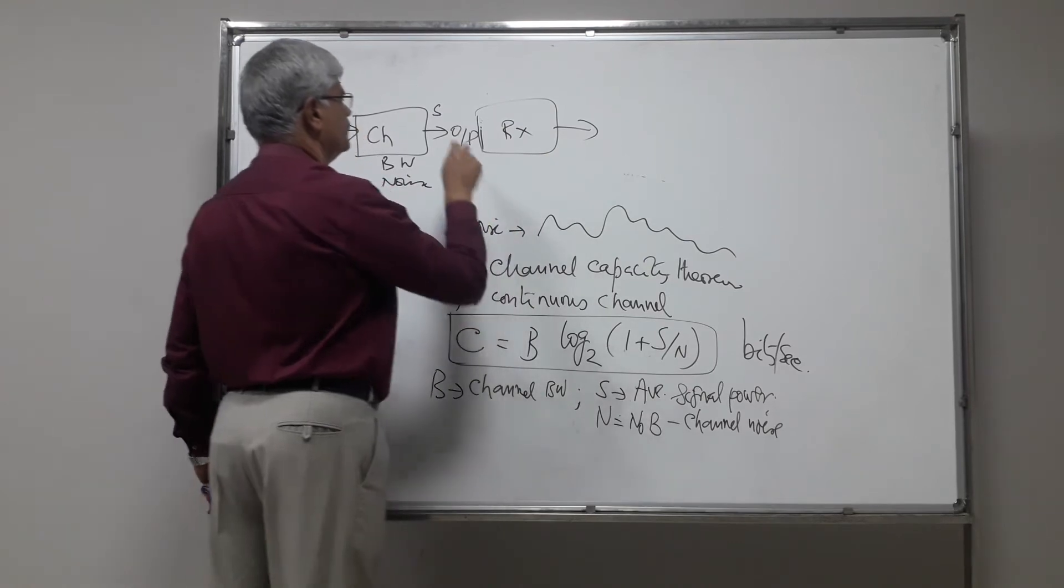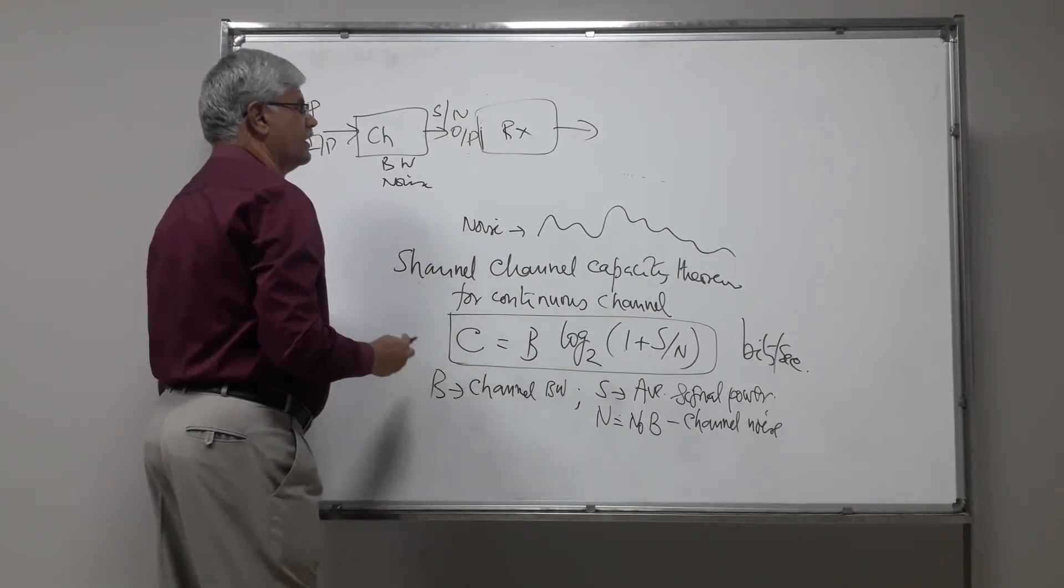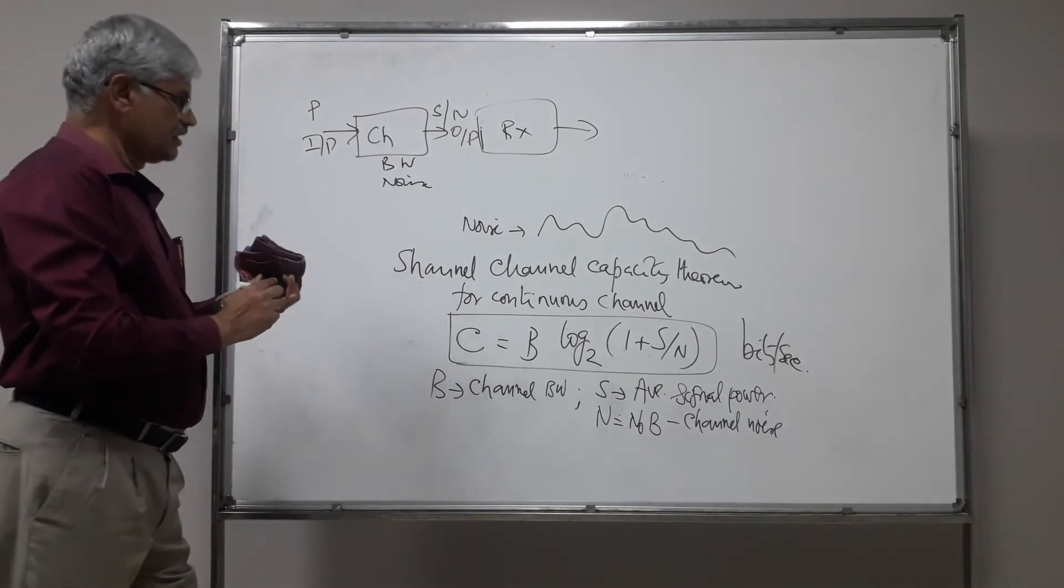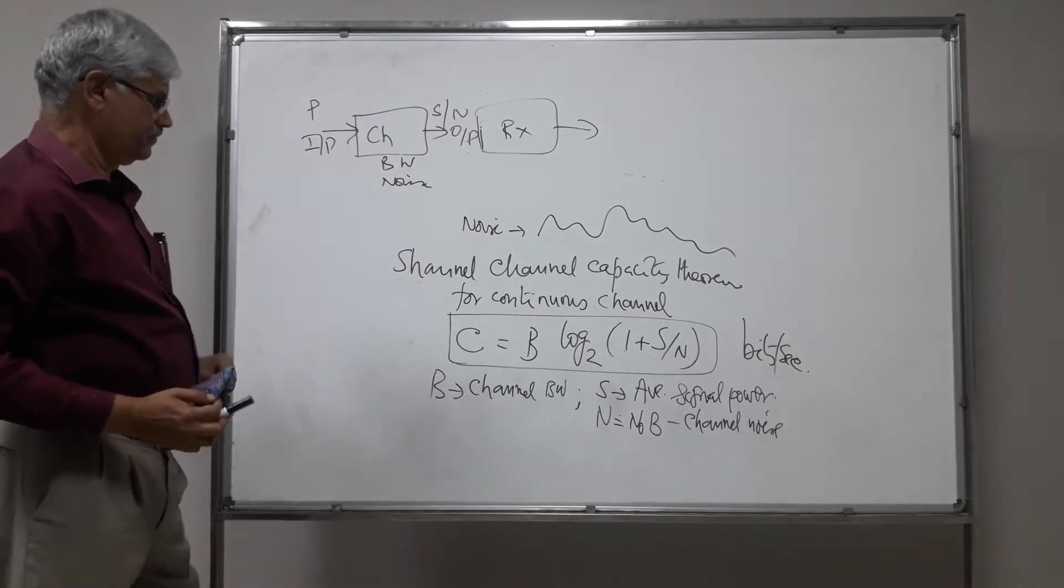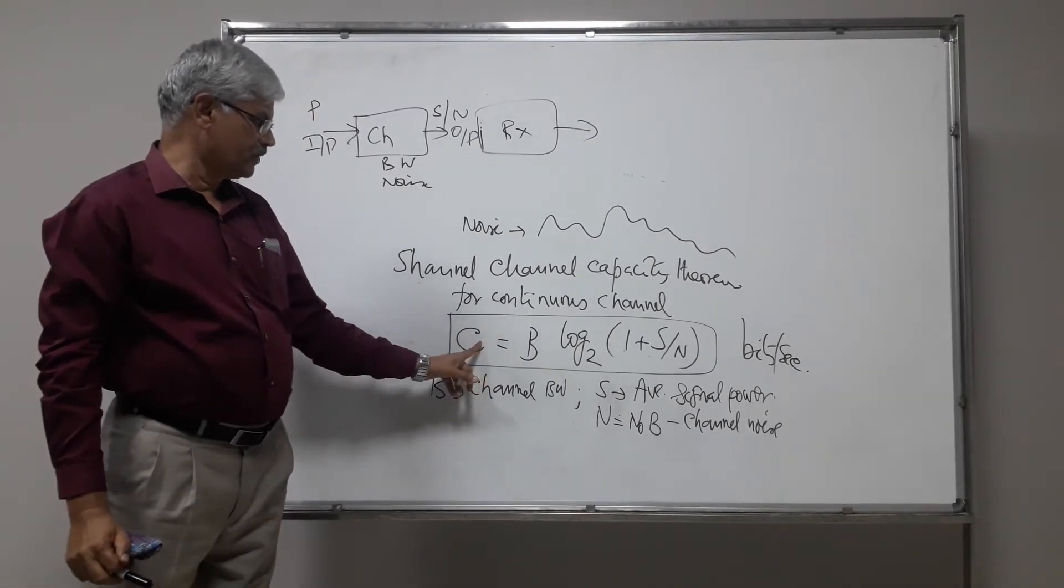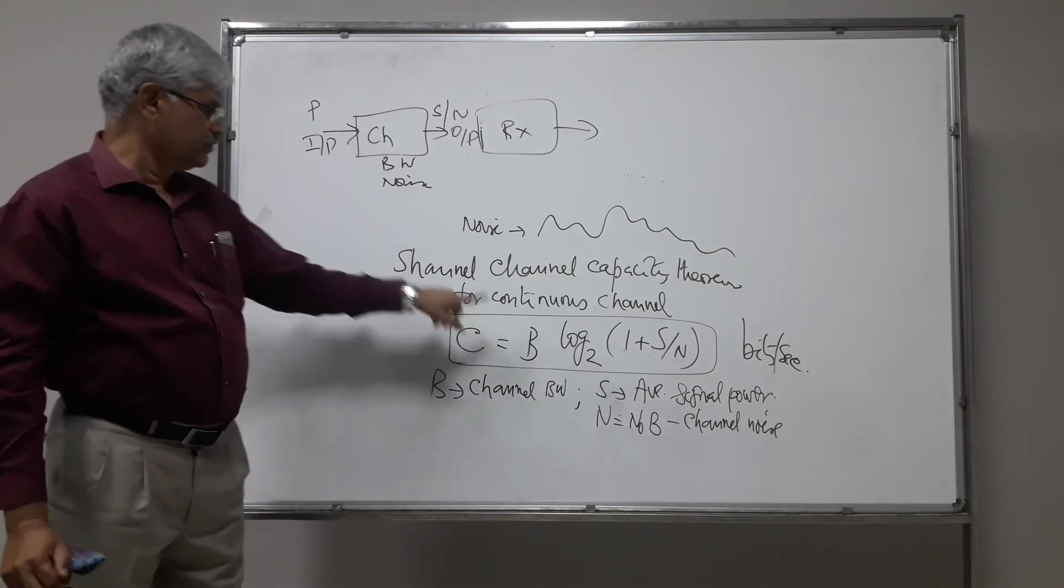So for the receiver input, S by N is like this, and maximum rate of transmission through the channel is given by this, so many bits per second, if the channel bandwidth is B hertz.